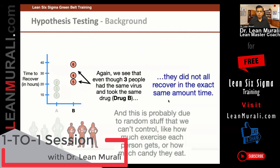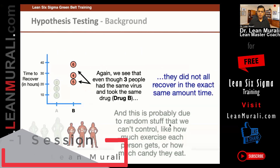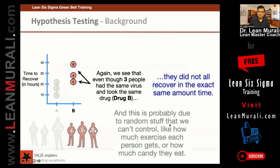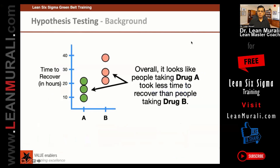This can be due to random factors that you cannot control, like exercise or diet and stuff like that. Overall, it looks like the people taking drug A took less time to recover than people taking drug B.